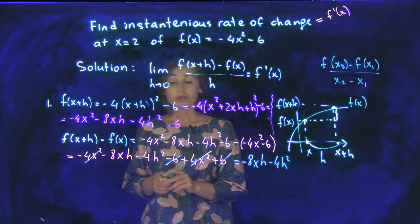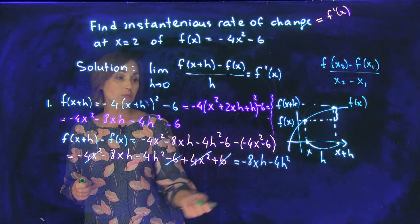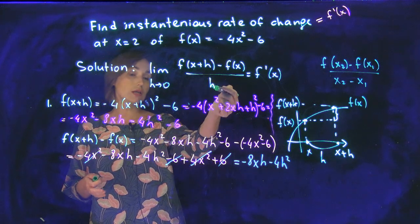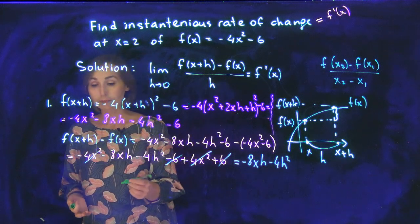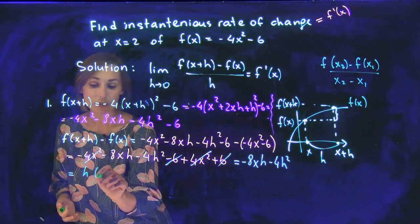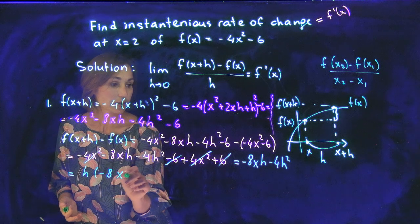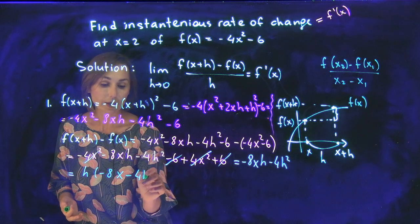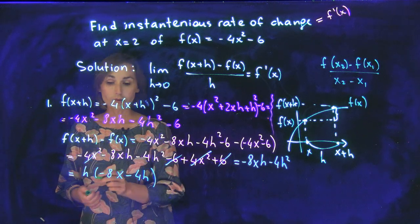Now, here is the thing. You can factor out h from above. And why do you need so? Because next step is actually divide by h. So if I factor out h, I will get negative 8x minus 4h inside of the parenthesis.